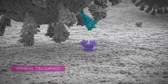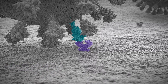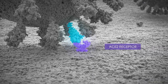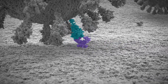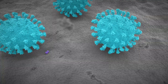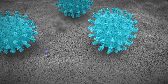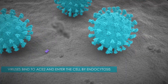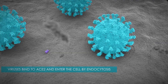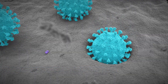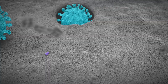It happens because the virus binds to a special receptor — angiotensin converting enzyme 2, or ACE2. It could be compared to ringing the doorbell. The virus looks like something harmless and the cell lets it in. That's how the whole story begins. And there are myriads of such receptors on a cell surface.